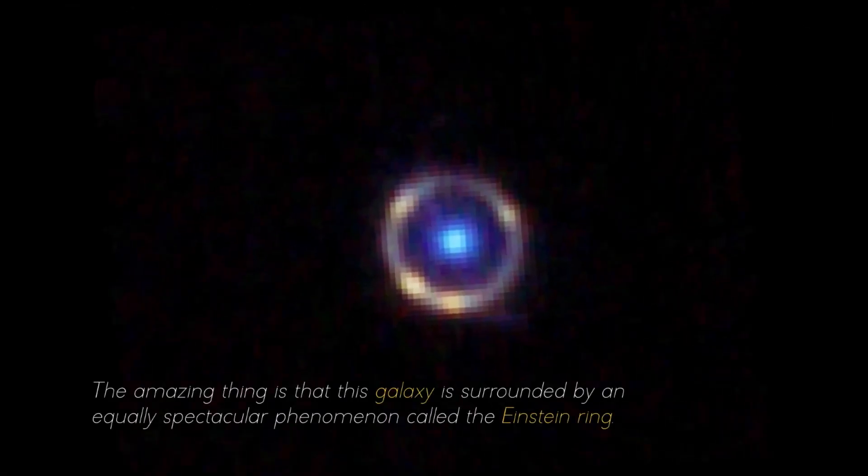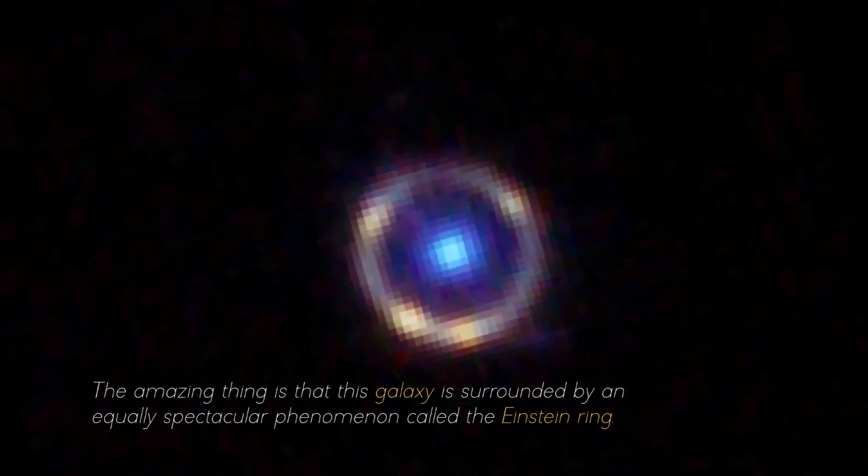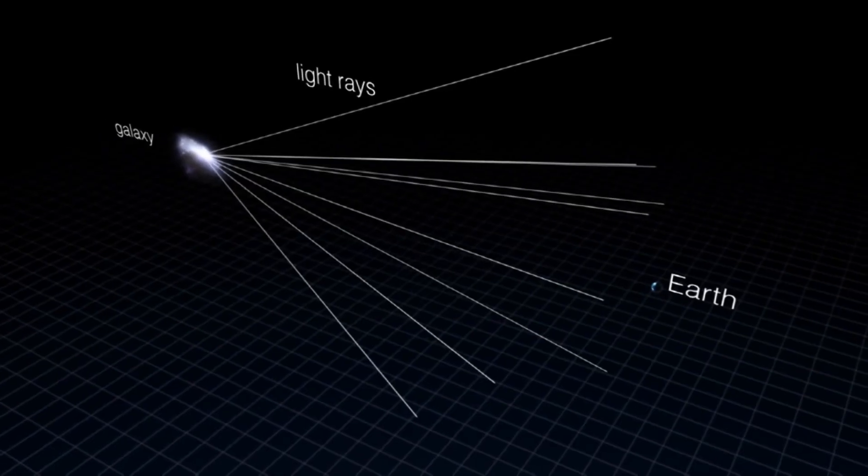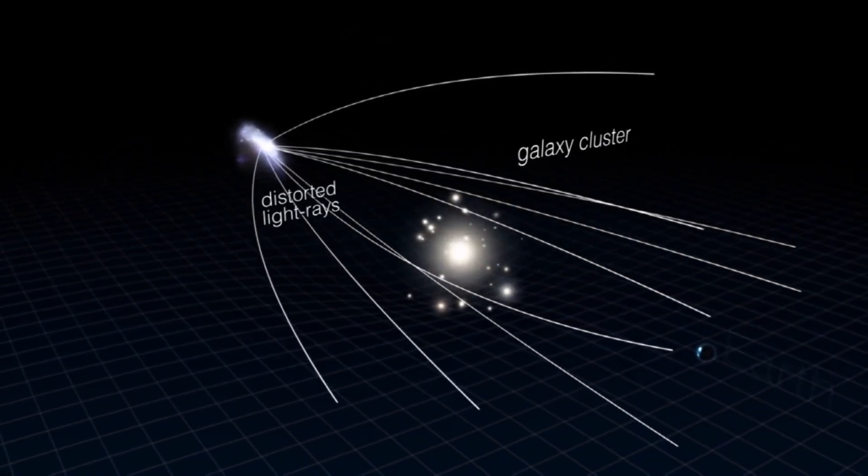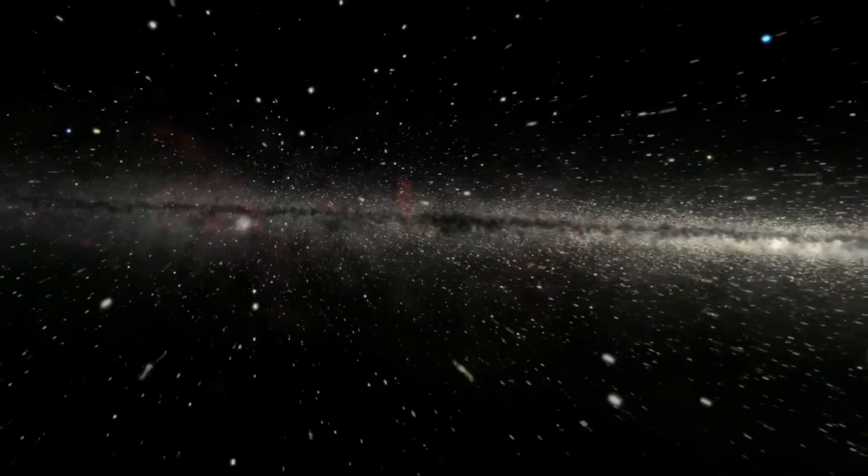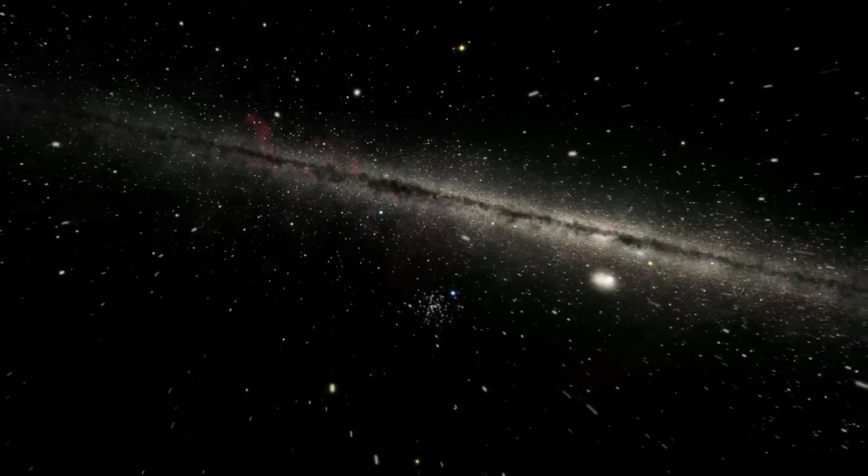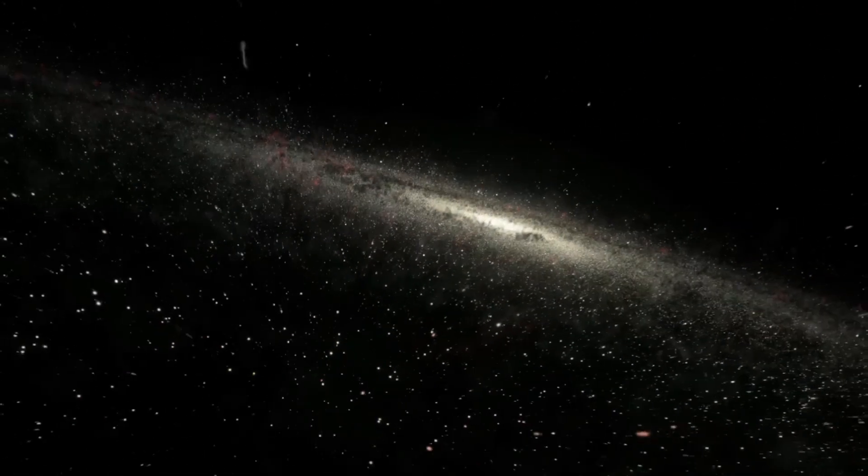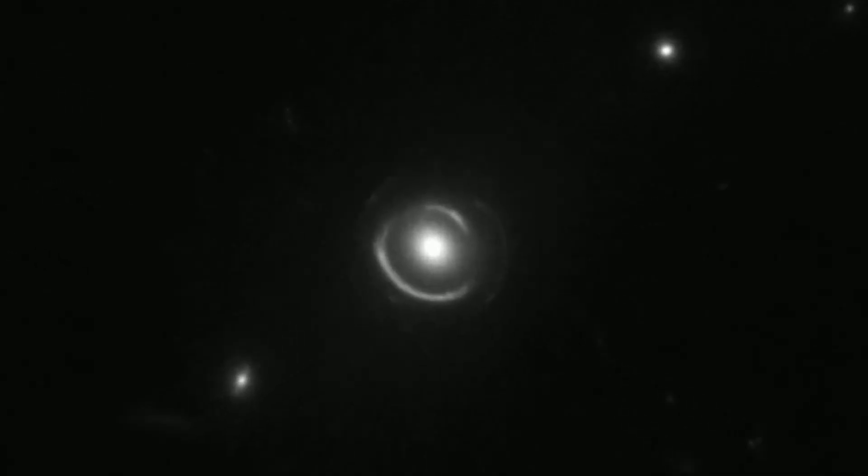The amazing thing is that this galaxy is surrounded by an equally spectacular phenomenon called the Einstein Ring. This phenomenon occurs when light from a distant galaxy is deflected and amplified due to the gravitational influence of a nearby galaxy. This discovery not only raises many questions about why this galaxy stopped star formation so abruptly, but also makes us question what physical mechanisms regulate star formation and how this process feeds back into similar galaxies representative of the early universe.